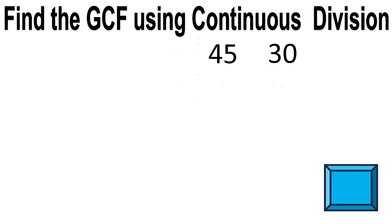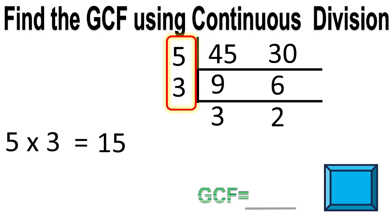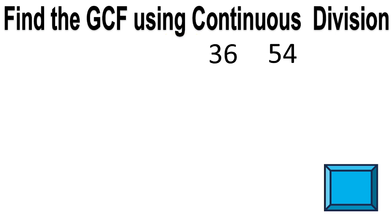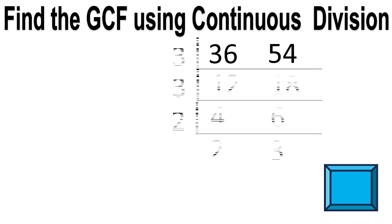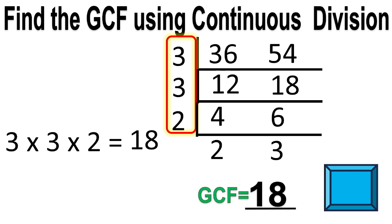Times up. The answer is 5 times 3 equals 15. The greatest common factor is 15. Next: 36 and 54. Times up. The answer is 3 times 3 times 2 equals 18. The greatest common factor is 18.